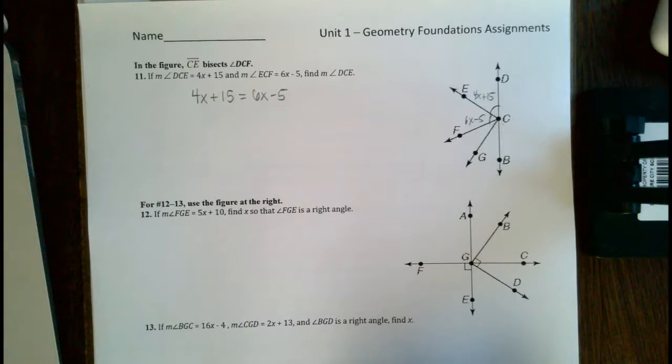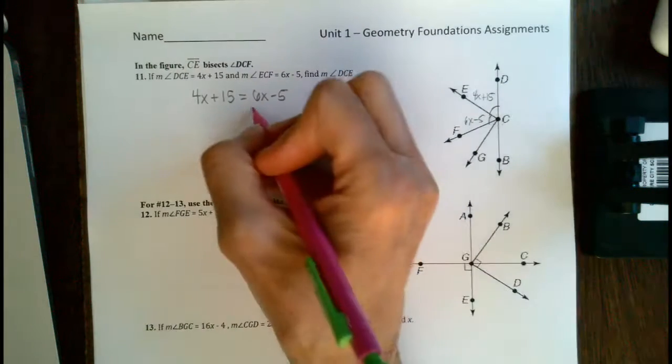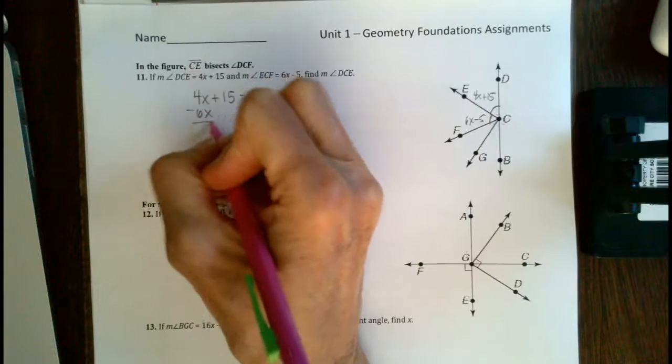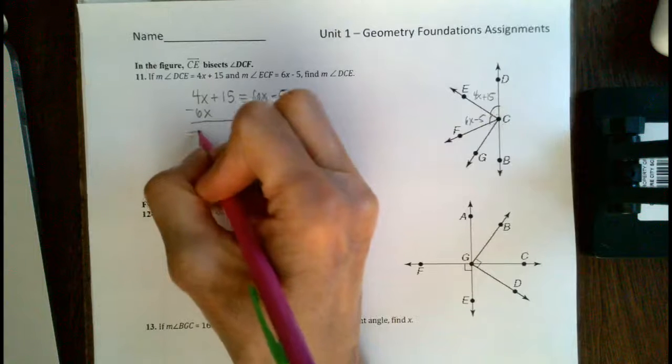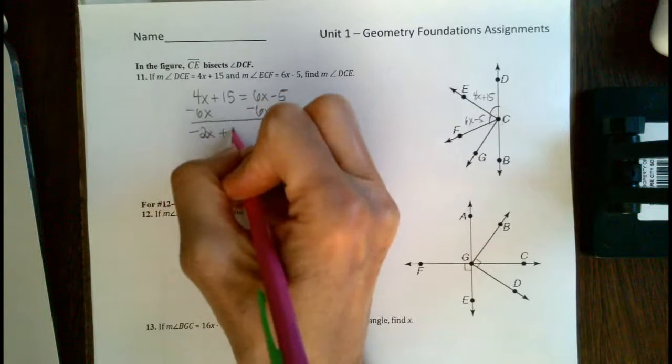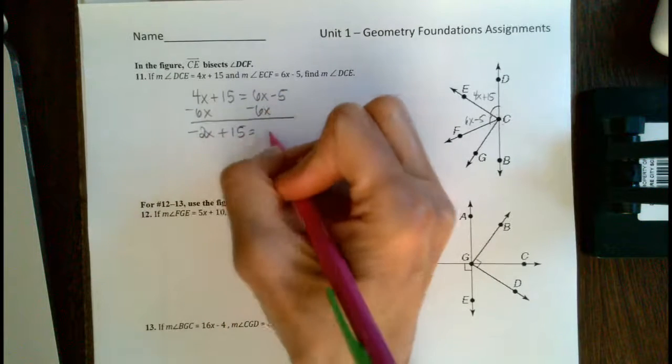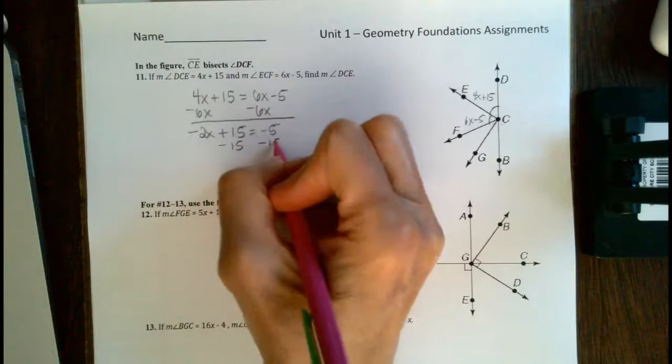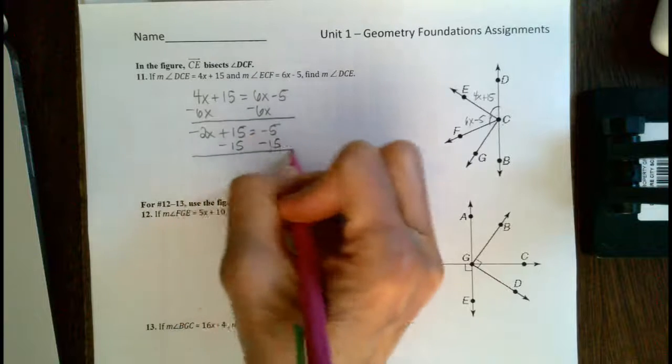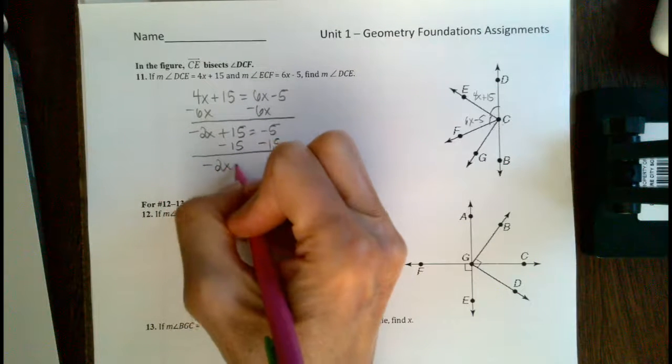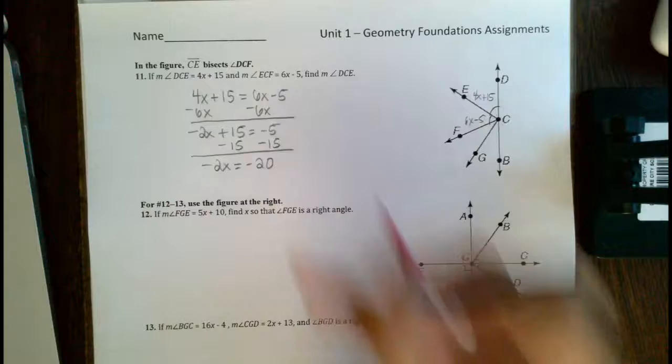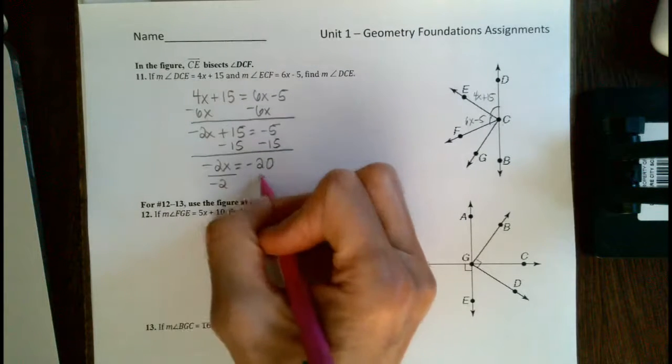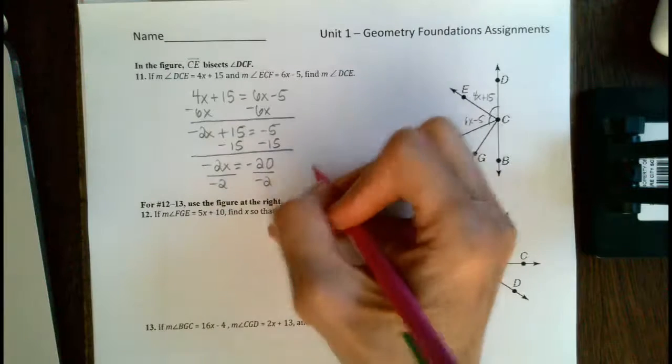Solve it the way your Algebra 1 teacher taught you. I'm going to move my letter to the left by subtracting 6x from both sides. We get negative 2x plus 15 equals negative 5, and then we're going to subtract 15 from both sides. Get negative 2x equals negative 20, and finally we can divide both sides by negative 2. So x equals 10.